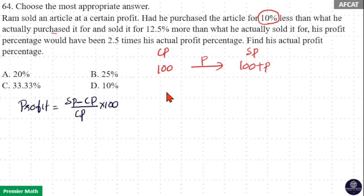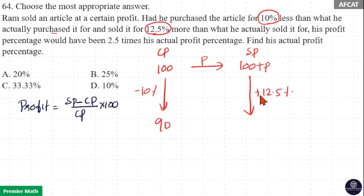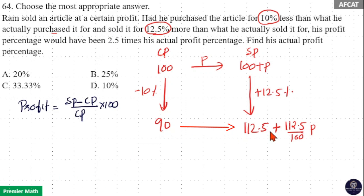The purchasing price is 100, so 10 percent less than that means 100 minus 10, which is 90 rupees. If he sold it for 12.5 percent more than the actual selling price of 100 plus P, that means 100 plus P plus 12.5 percent of 100 plus P. Here 12.5 percent of 100 is 12.5, and 12.5 percent of P is 0.125P. Taking the difference between the new sell price and new cost price gives 22.5 plus 0.125P.